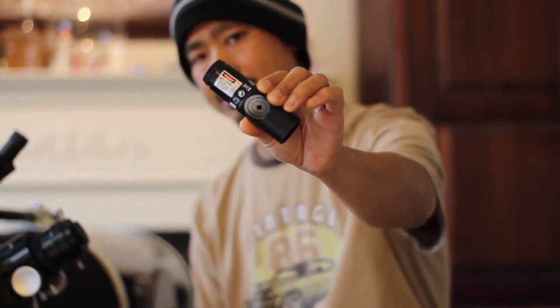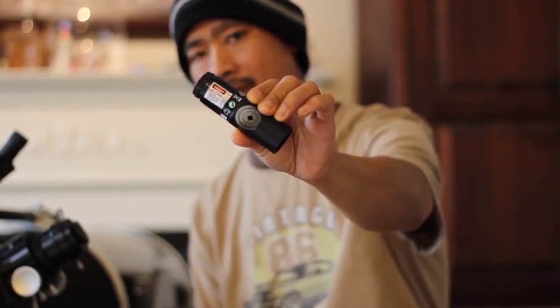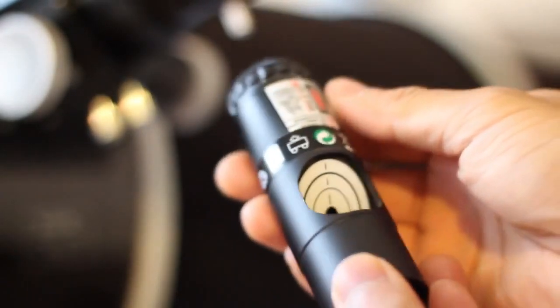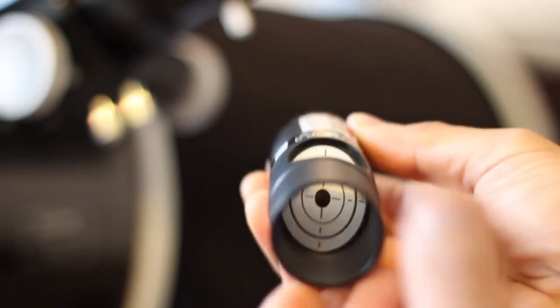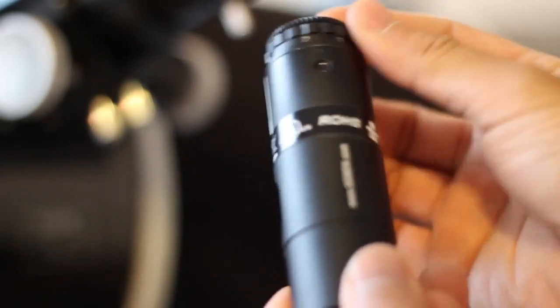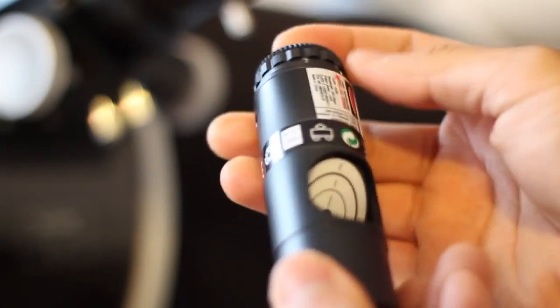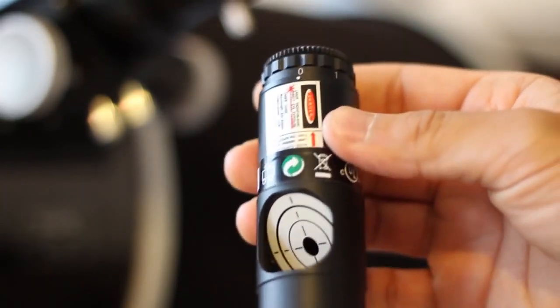Now this laser collimator is not very expensive. I got this off eBay for around $50 and it works. But make sure that is true. There are videos out there to show you how to make sure that the laser is straight, by turning it around like this. I'm not going to go into detail. But this laser collimator is definitely straight and collimated.